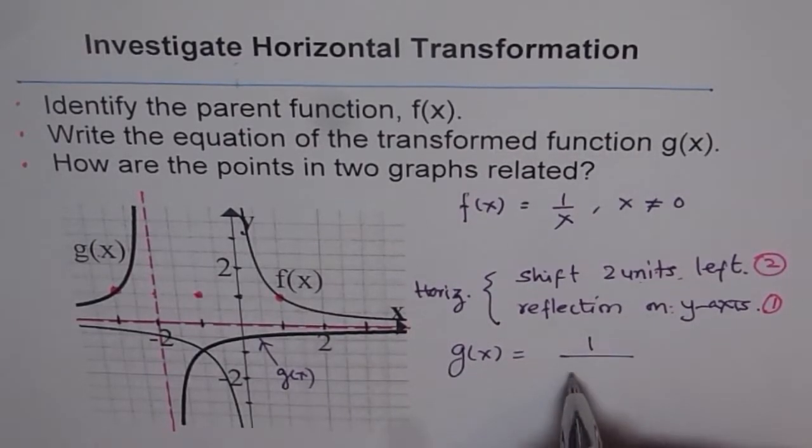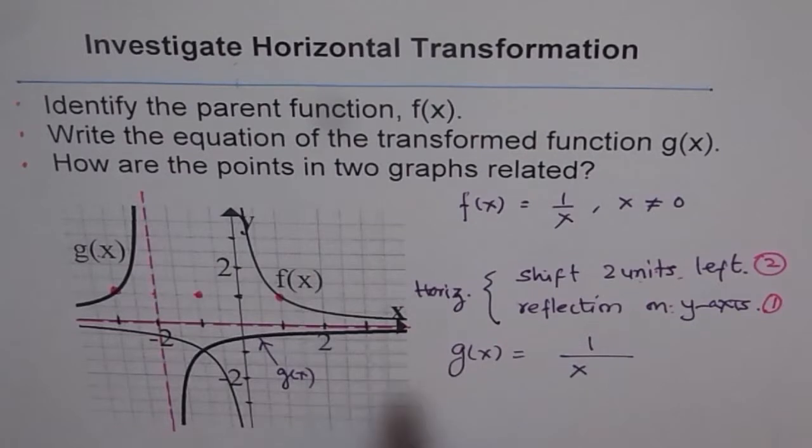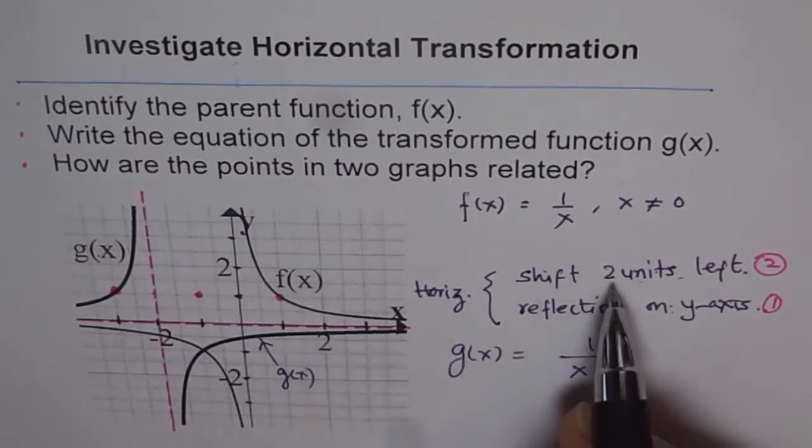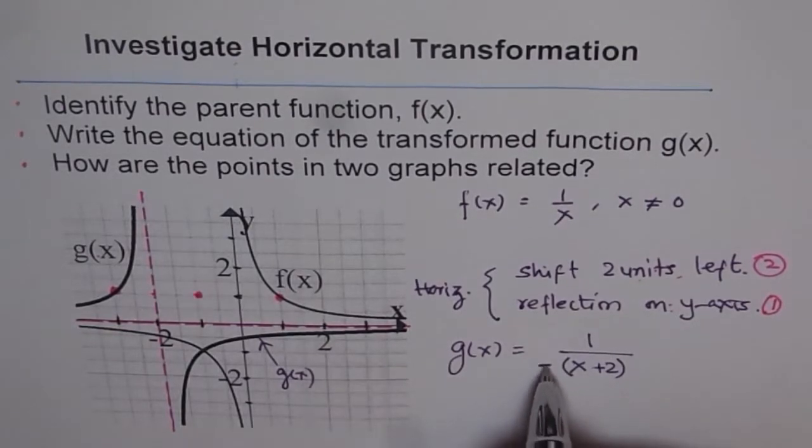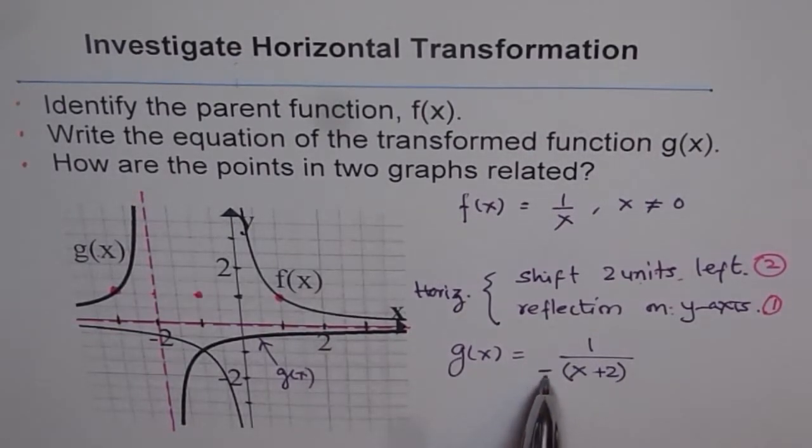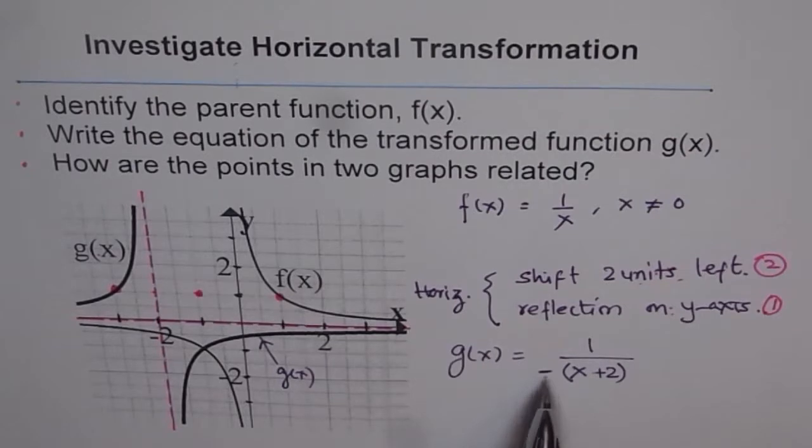And I say g(x) is equals to 1 over x, and since it is a left side, right, so I have to write plus two here. Put them in brackets, don't forget, and write minus here.